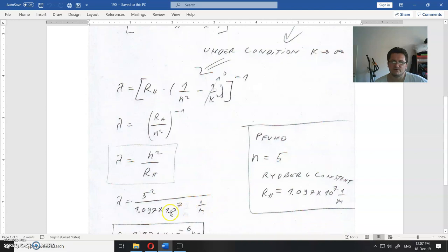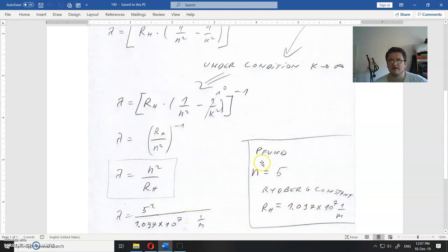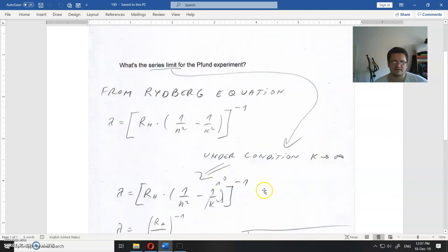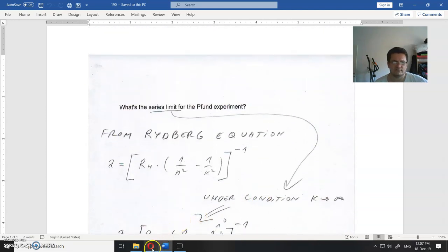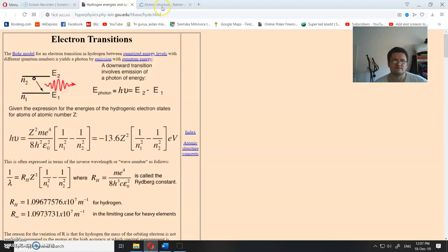I am not going to show you the motion, but it is easy to calculate. This is the Rydberg constant. And why n equals 5? Well, because that is the Pfund series.